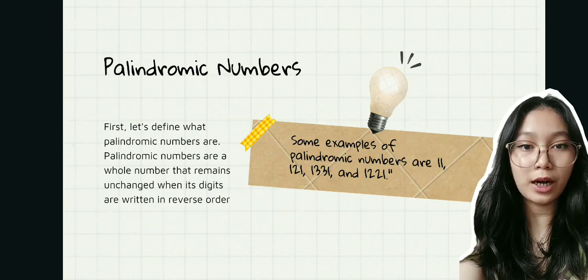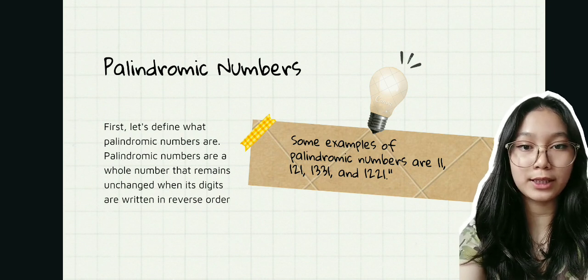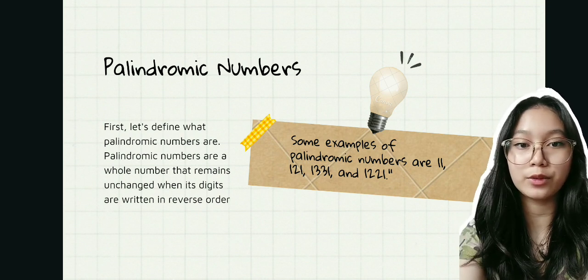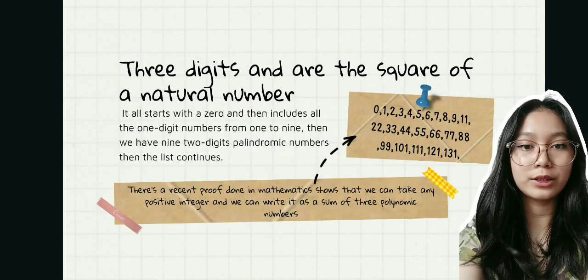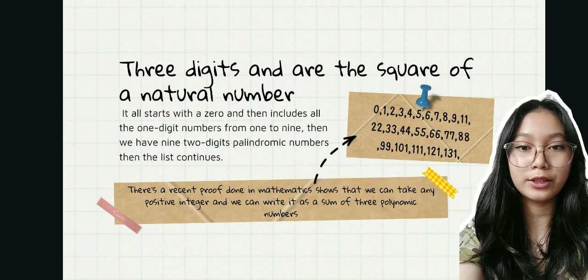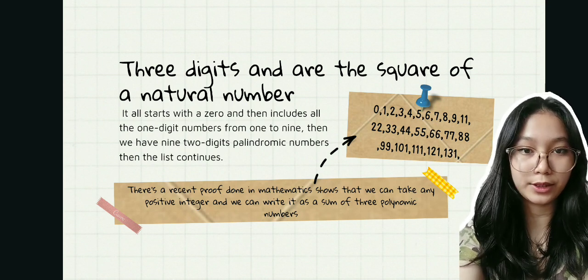Palindromic numbers are whole numbers that remain unchanged when their digits are written in reverse order. Now, let's go to the three digits that are the square of natural numbers.